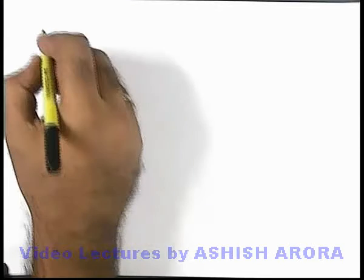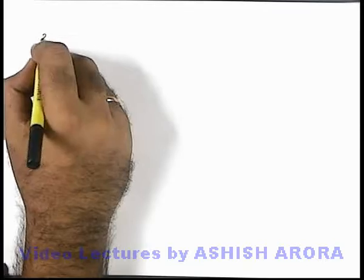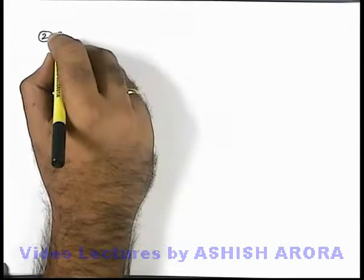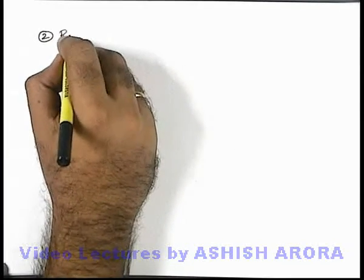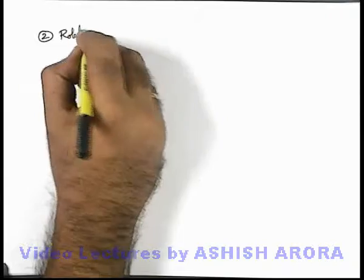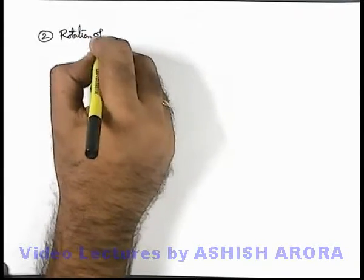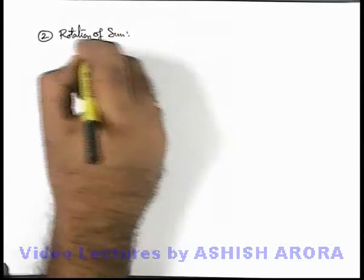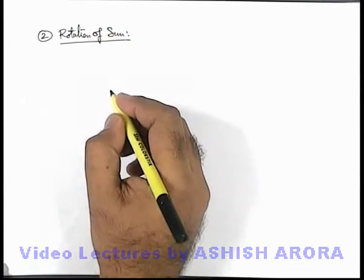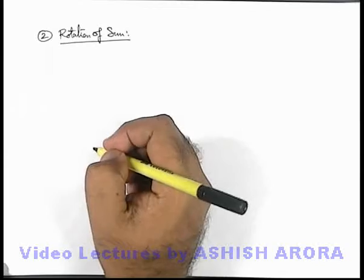Now the second application of Doppler shift is analysis of rotation of the sun — or just to find about which axis of rotation the sun is rotating.